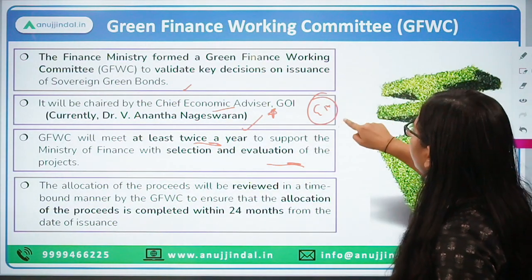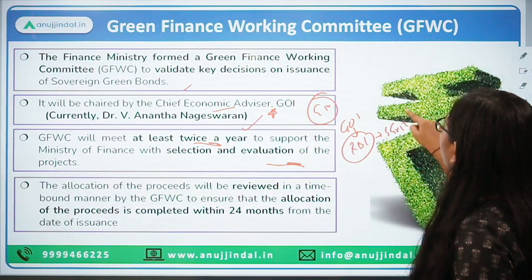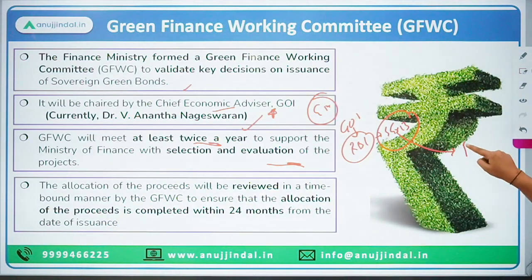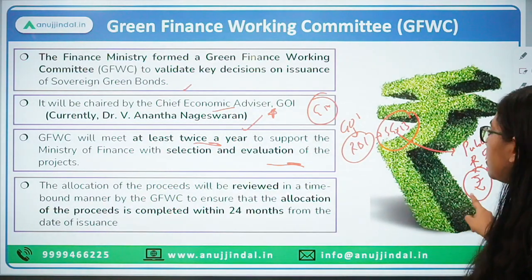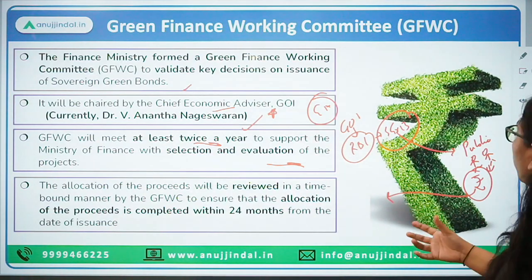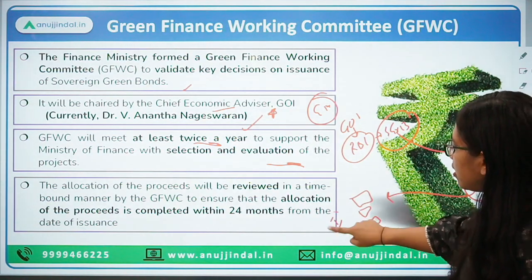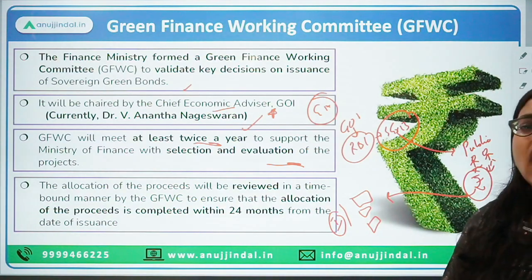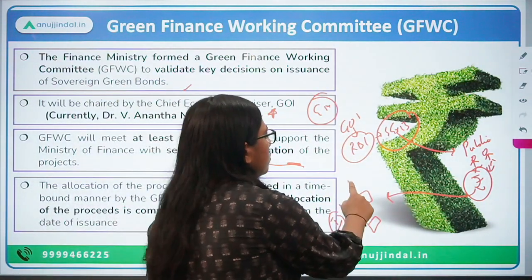Here is the process flow: the Government of India asks RBI to issue sovereign green bonds. These bonds are issued to the public, who then provide money. This money will be utilized by the relevant ministries, which will receive proposals from various industries or MSMEs that want to undertake green projects.